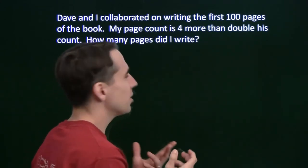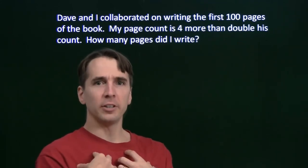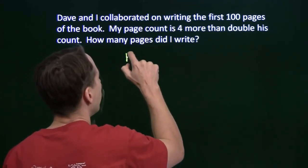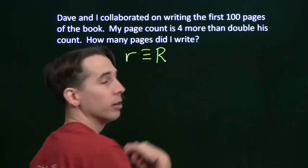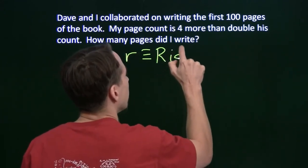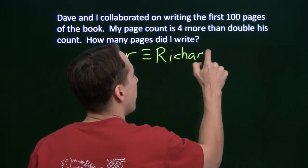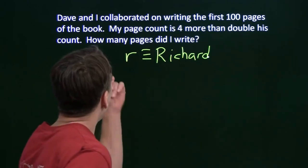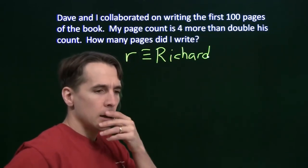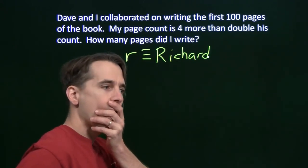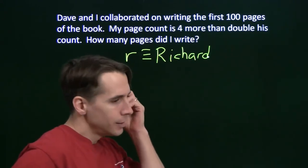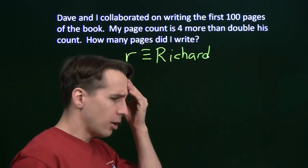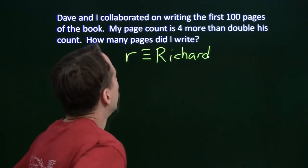Once again, it doesn't tell us exactly what the variable should be, so we're going to have to figure that out for ourselves. We want the number of pages that I wrote, so we're going to let our variable be r for Richard. That's me. So r is my count. And let's see, if my count is r and my count is four more than double his, then his page count... I got nothing. I don't know how to write an expression for his page count. What are we going to do?